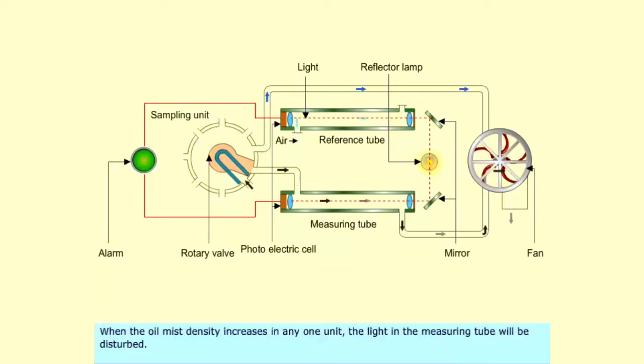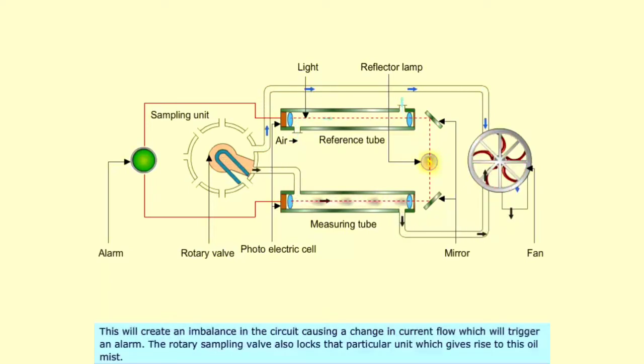When the oil mist density increases in any one unit, the light in the measuring tube will be disturbed. This will create an imbalance in the circuit, causing a change in current flow, which will trigger an alarm.